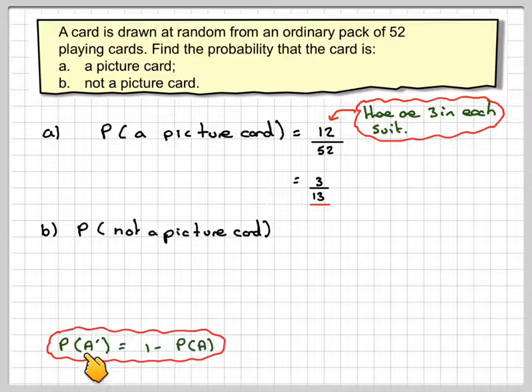So, this comes from this formula, the probability of event A not happening, that's what the symbol means, is 1 minus the probability of an event happening.